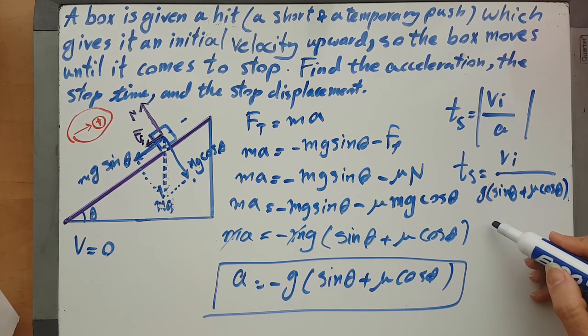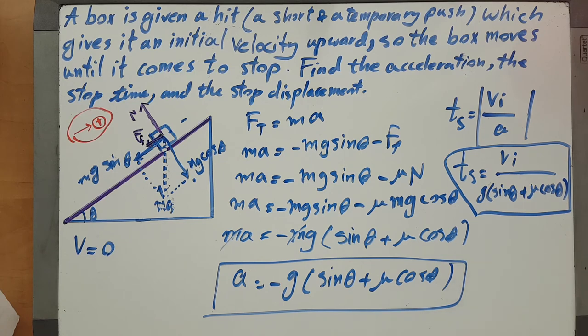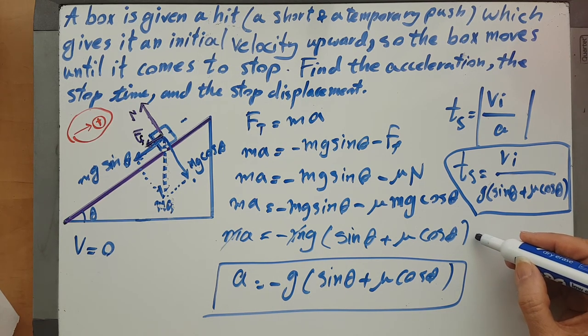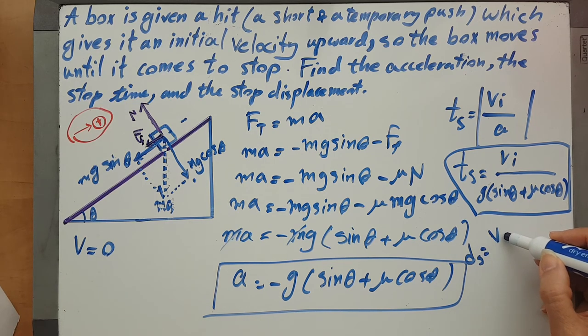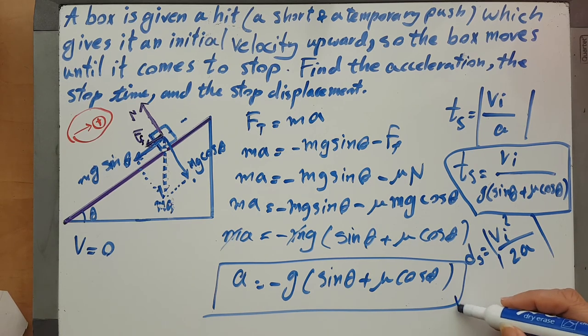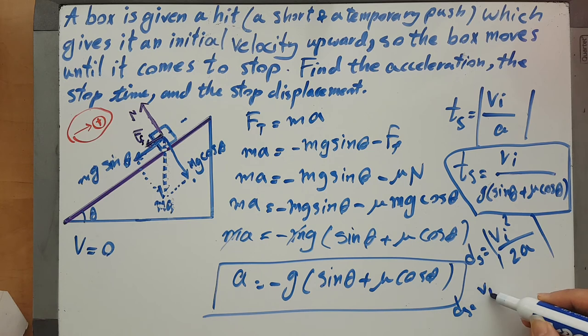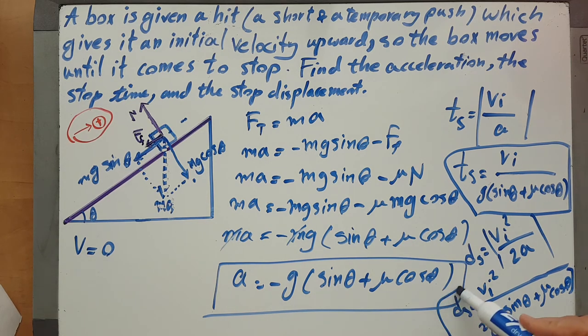Yeah, and then this is another answer. And the other thing we are looking for is actually the distance - I mean the stop displacement - which would be v initial squared over 2a. So just substitute: v initial squared over 2g sine theta plus mu cosine theta. That's it, this is the other answer.